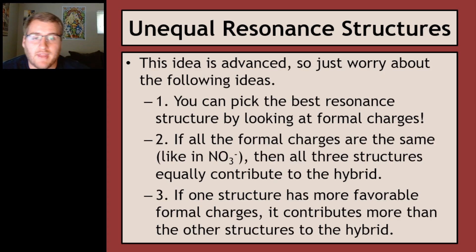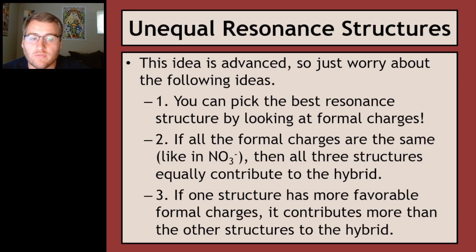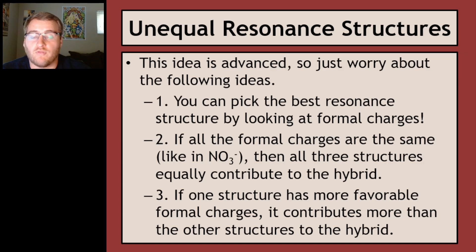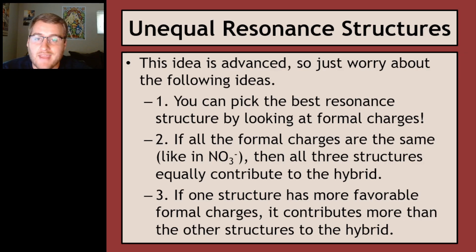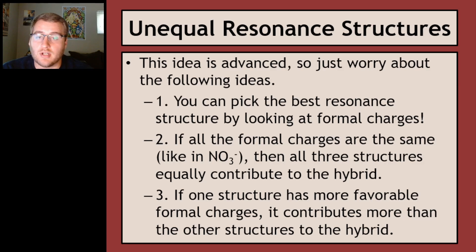So here's what you need to know: you can pick the best resonance structure by looking at formal charges. If all the formal charges are the same across structures, all contribute equally to the hybrid. But if one structure is more favorable — meaning more stable with more favorable formal charges — it contributes more to the hybrid than the others. You don't need to know how much more; you just need to tell the AP test which one is the best and that it contributes the most to the resonance hybrid.